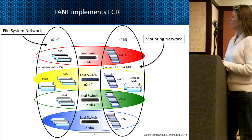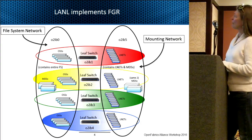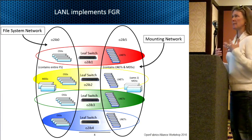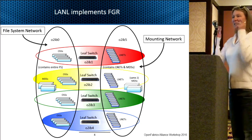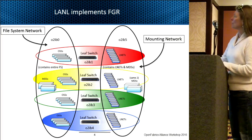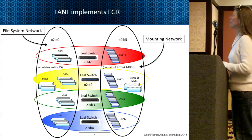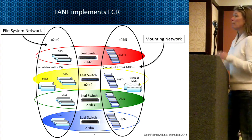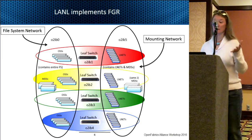You end up with four different Lustre networks in this case. You still need a default for the file system to talk to itself — very low bandwidth, metadata type stuff. And you need another one — your mounting Lustre network — where clients talk to the MDS through LNET routers. That's also very low bandwidth. So you wind up with six instead of one Lustre network, but you've gained the fact that you know where your communications are happening and it's all on the leaf switch.